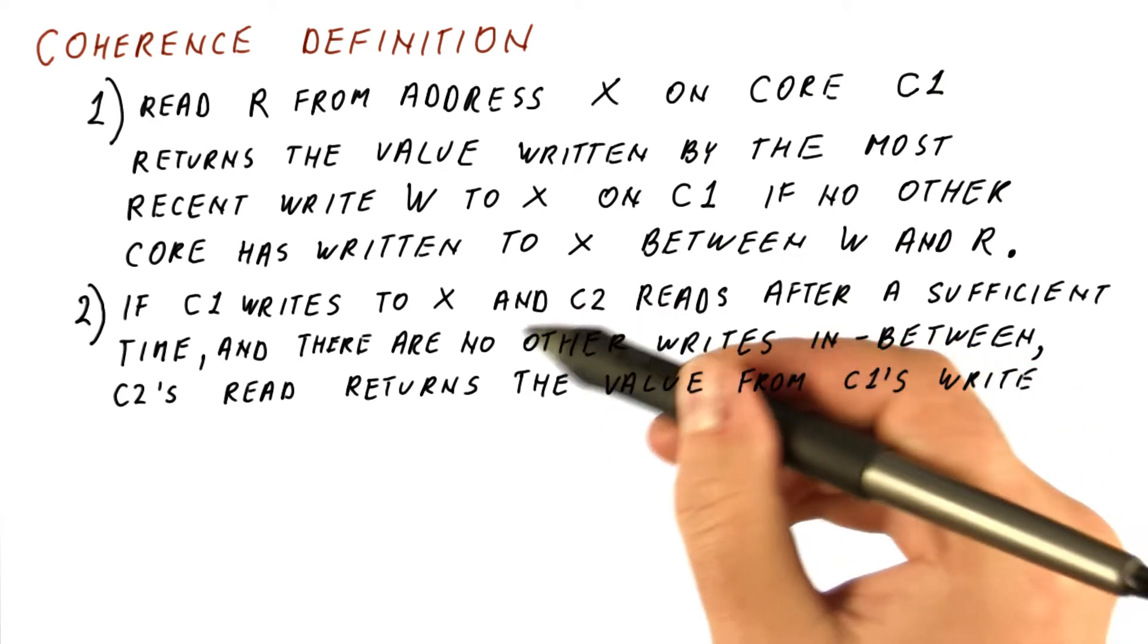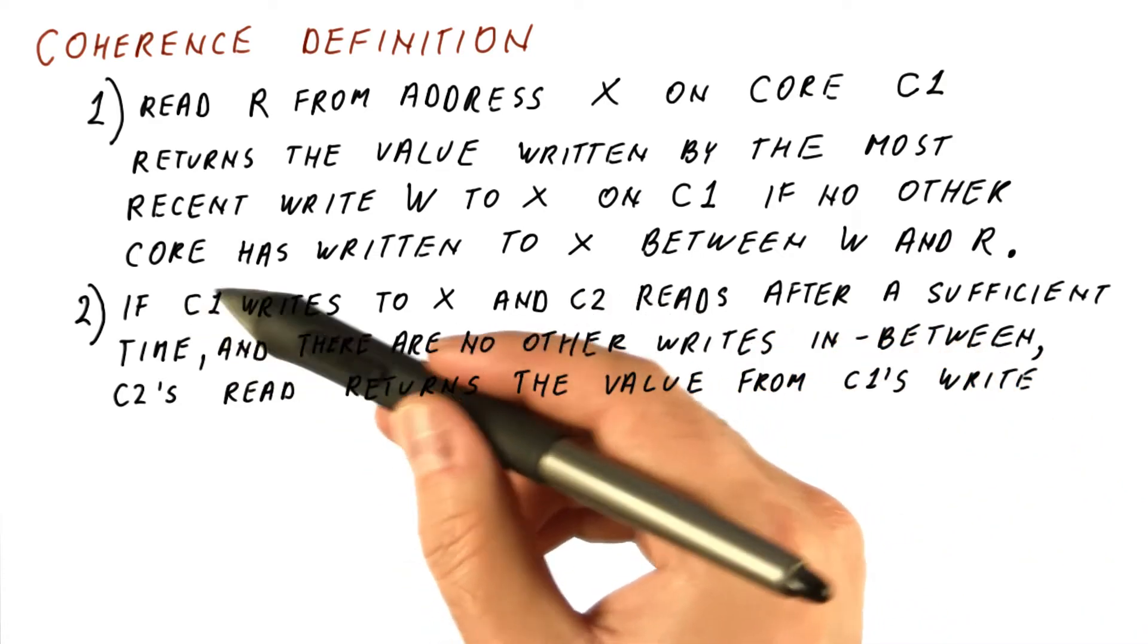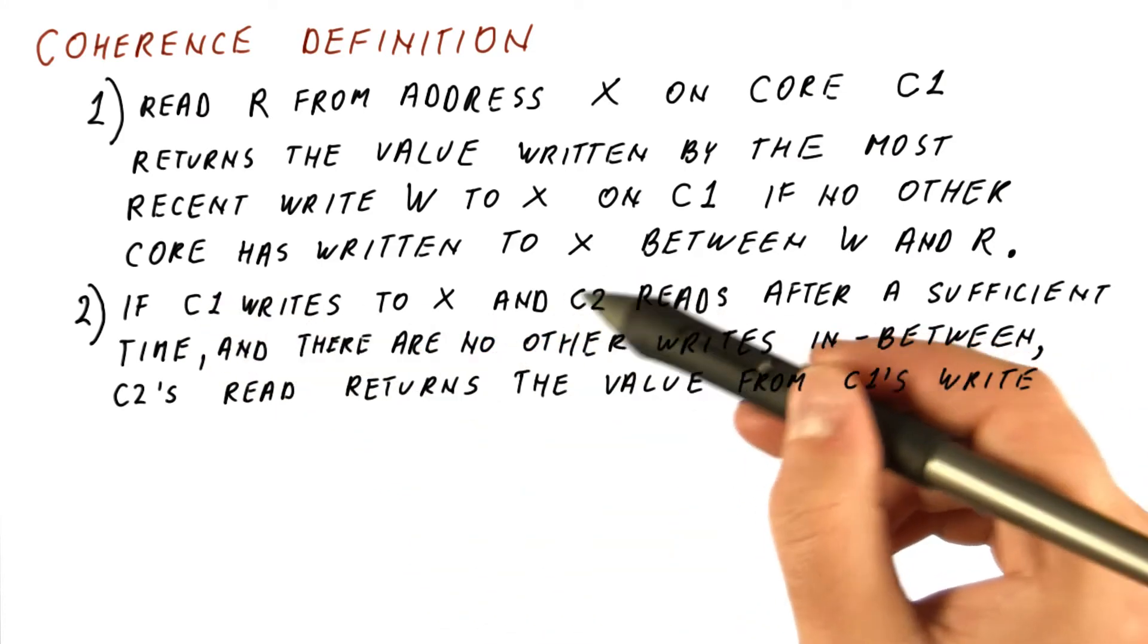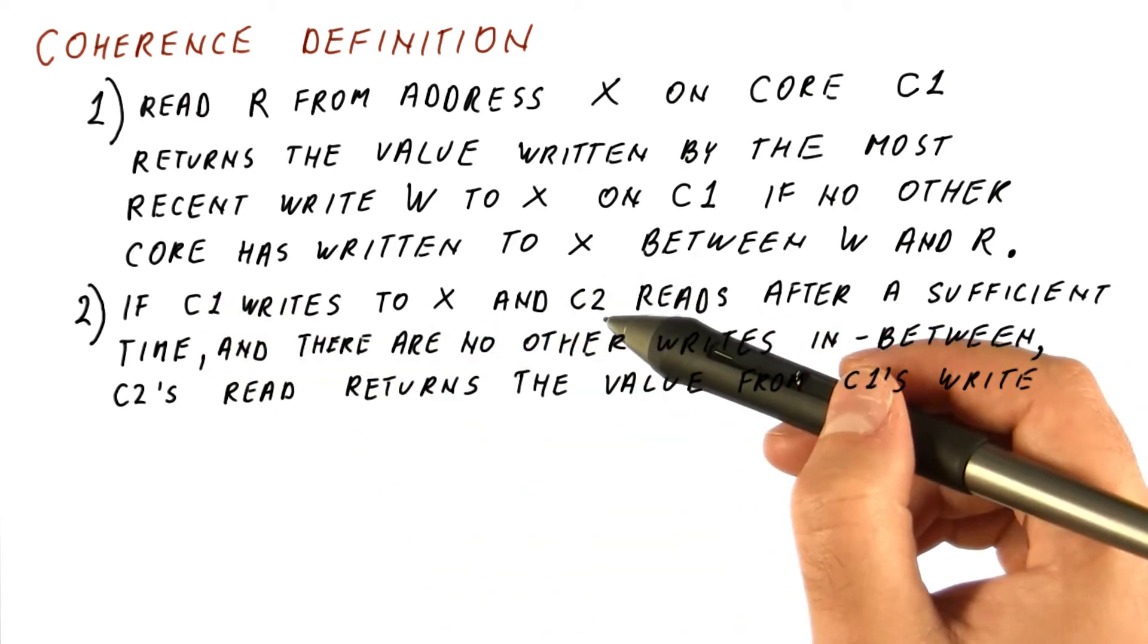So this part of the definition really prevents the case when, for example, c1 writes something to its own cache, c2 reads forever from its cache a stale value. To be coherent,